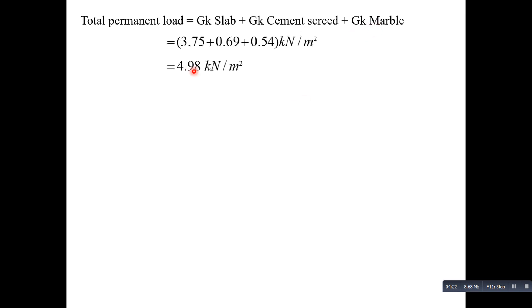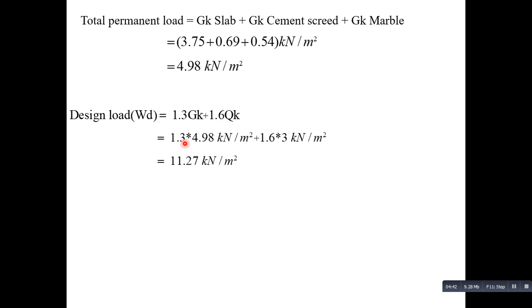According to the load combination, we multiply the permanent load by 1.3 and the variable load by 1.6. So: 1.3 × 4.98 kN/m² (total permanent load) plus 1.6 × 3 kN/m² (variable load) gives us a design area load of 11.27 kN/m².